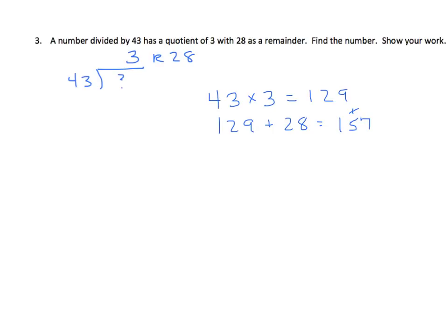Let's just see if that works. We'll double check things here. So we have 157 divided by 43. And we know that 43 times 3 is 129. We'll subtract, and we get 3 with a remainder of 28. So that checks out. So what is our answer? The number is 157.